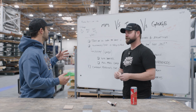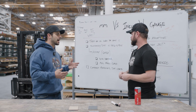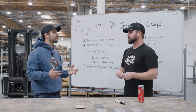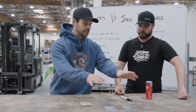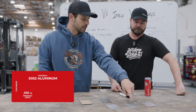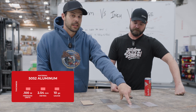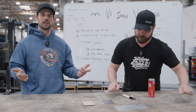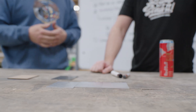They're all kind of the same thing — just different units to describe the thickness of the material. For instance, right here I have these three samples. This material is 100,000 thou thick aluminum. This one is 2.54 millimeters thick. This one is 10-gauge material. They're all the same material — three different ways to describe it.